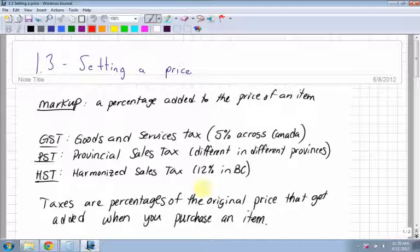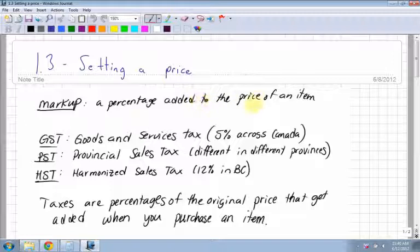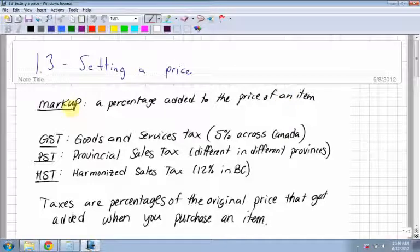Section 1.3 is setting a price. There's a few definitions I want to go through first. The first one is markup. Markup is a percentage added to the price of an item. Usually stores charge a markup based on what they pay for the item. They will buy items and sell it to you at a markup, at a percentage added.